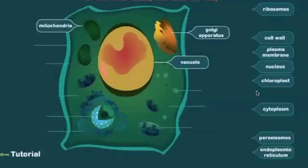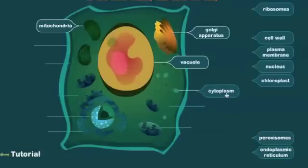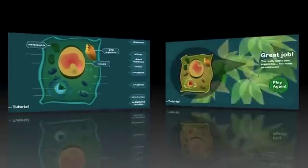The plant cell game works by drag and drop, just like the animal cell. If you incorrectly match a name and an organelle, the name just jumps back to the starting point.